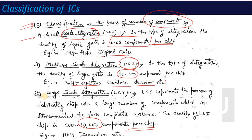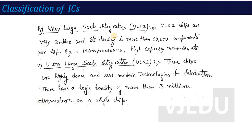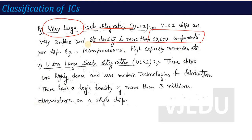If the density is more than 10,000 components on a chip, it is called Very Large Scale Integration (VLSI). Examples include microprocessors and high-capacity memory chips containing more than 10,000 components on a single chip. Beyond that is Ultra Large Scale Integration (ULSI).